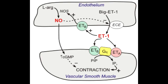So if Bosentan's mechanism of action is to decrease pulmonary vascular resistance, what do you think its clinical use would be? The clinical use of Bosentan is to treat pulmonary arterial hypertension.